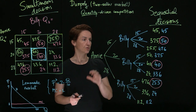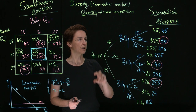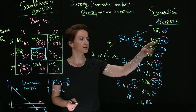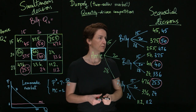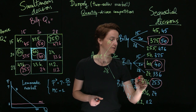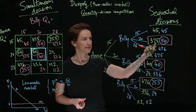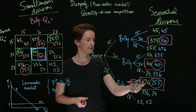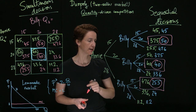Annie knows this, so she's able to look ahead and realize that the outcomes she is actually choosing between aren't nine outcomes, but these specific three outcomes. She'll be comparing her payoff in each of these three cases, and her payoff is highest if she makes 28 glasses.